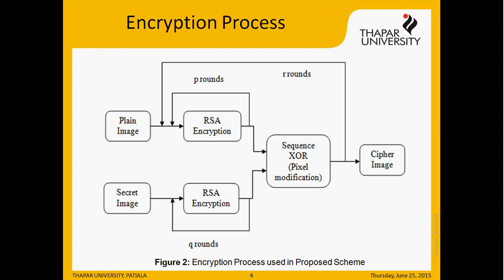This diagram represents the process of encryption. Here, the secret image works like a private key. The plain image and secret image are encrypted using the RSA encryption algorithm for P and Q rounds respectively. The result of these two images is sequentially XORed, so the pixels of the plain image are modified according to the secret image. The output is then fed back as input to the plain image again, and this process continues up to R rounds. Finally, the output after R rounds will be the ciphered image.